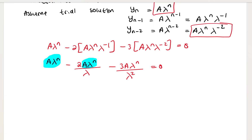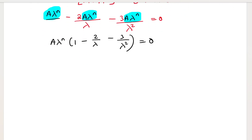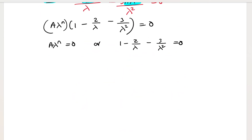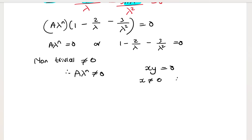I have a common factor of A·λ^n in all three terms. Pulling it out gives A·λ^n times (1 minus 2/λ minus 3/λ²) equals zero. Since the trial solution must be non-trivial, A·λ^n must not equal zero, so it is the bracket that must equal zero: 1 minus 2/λ minus 3/λ² equals zero.